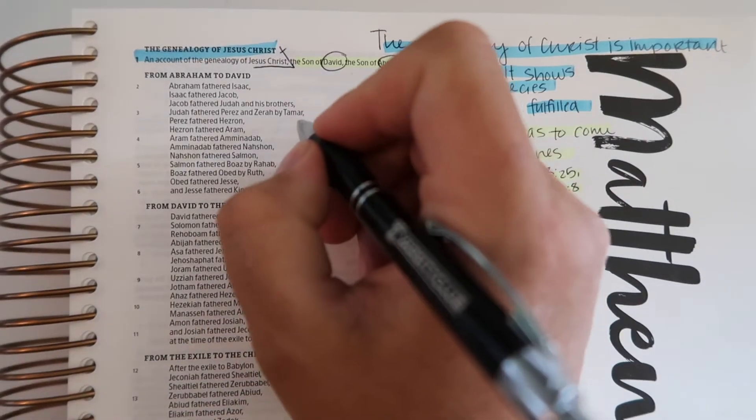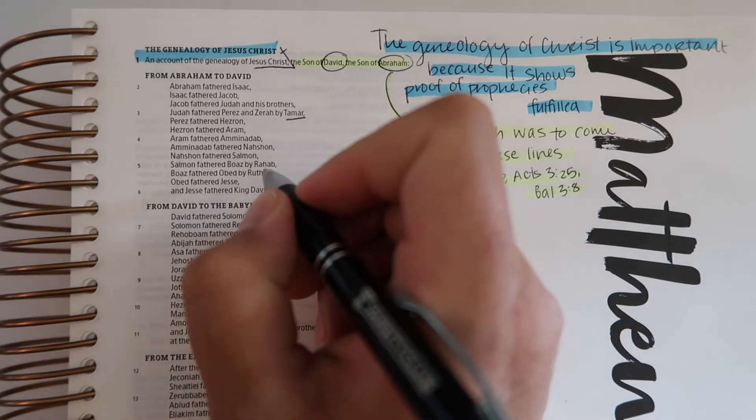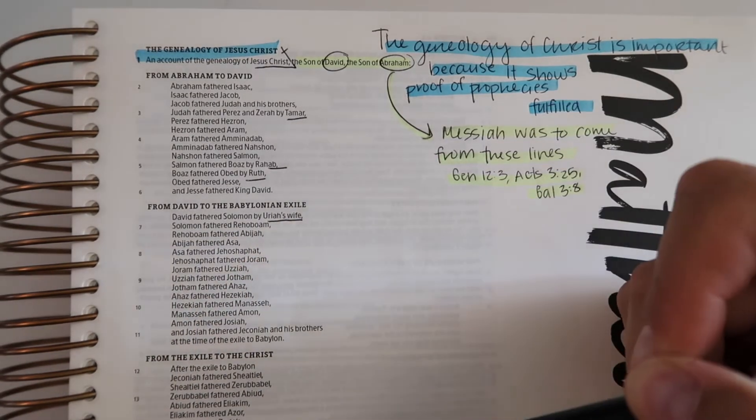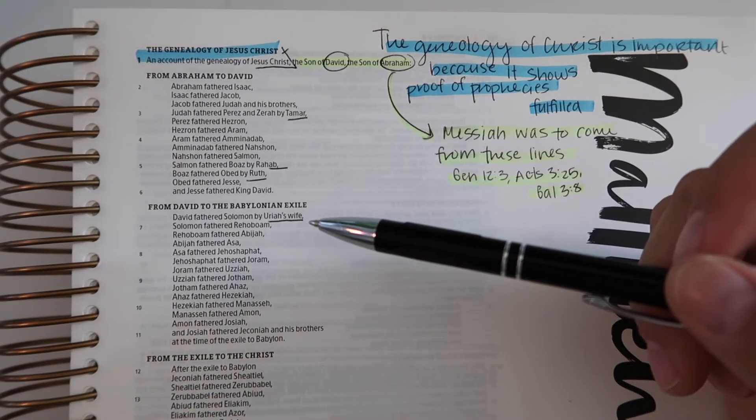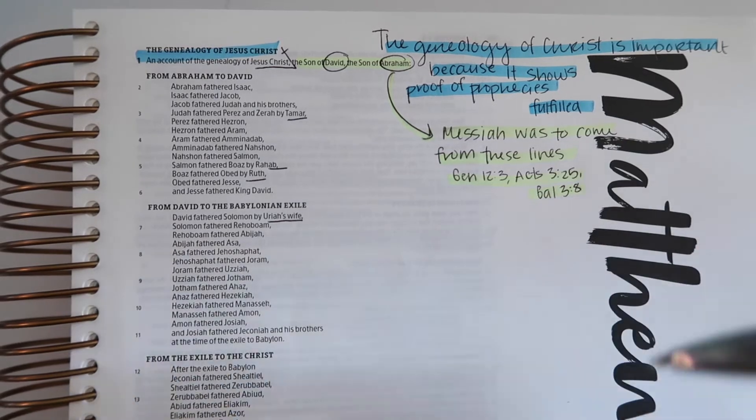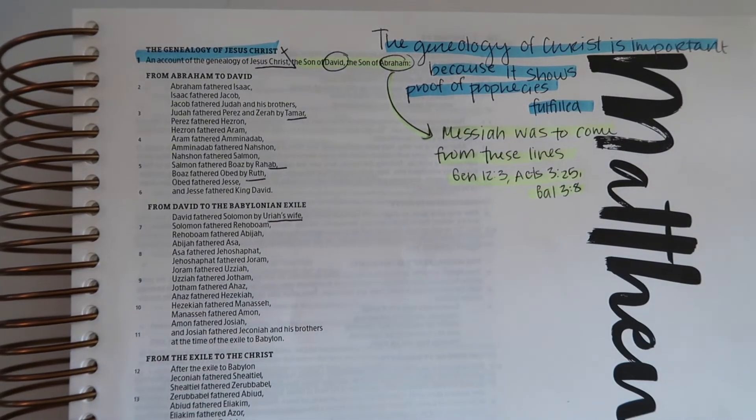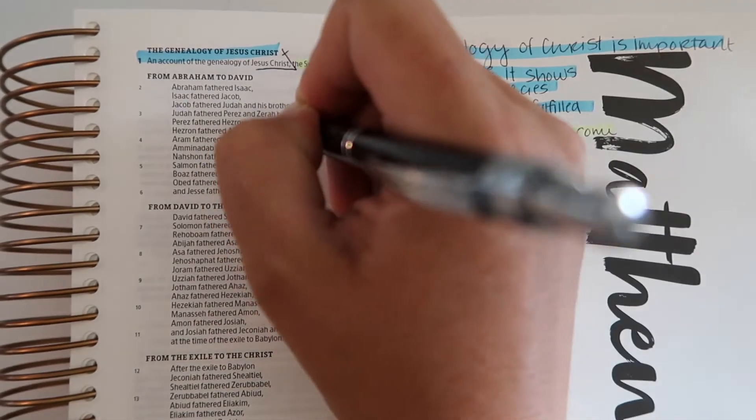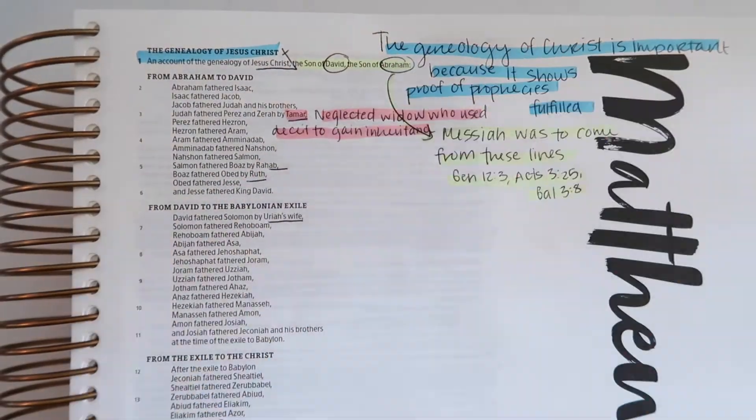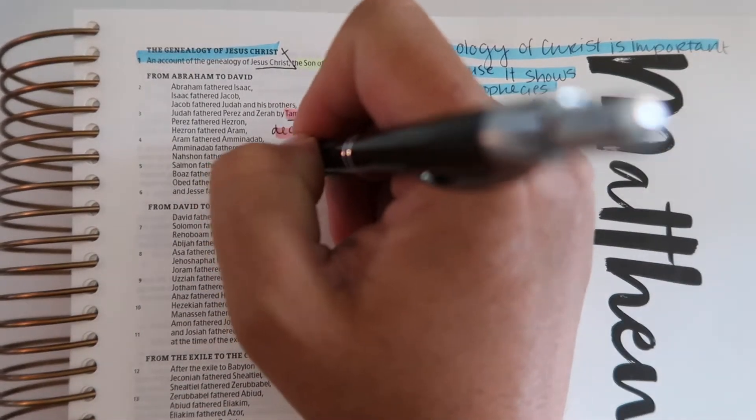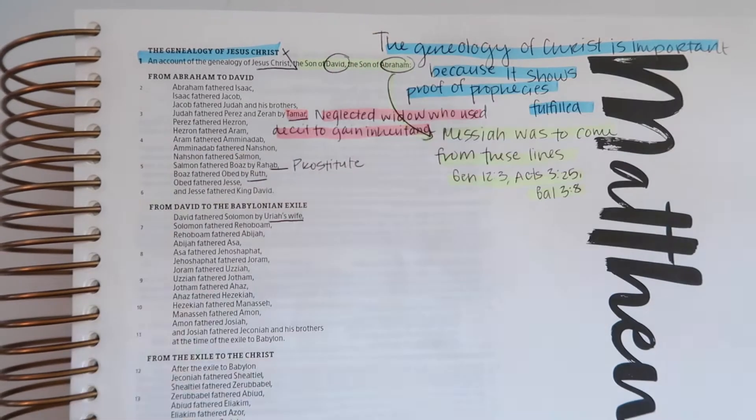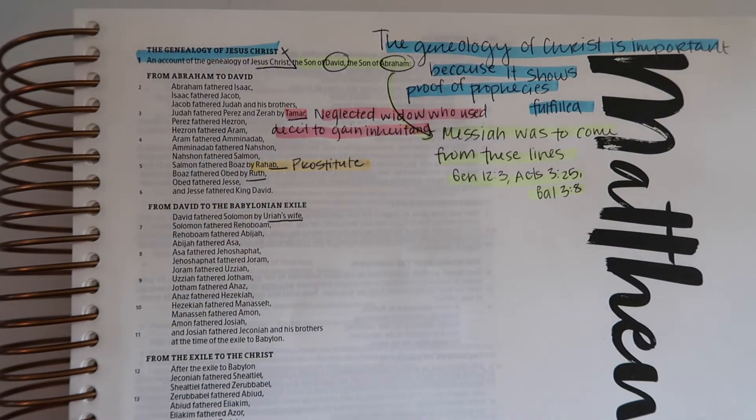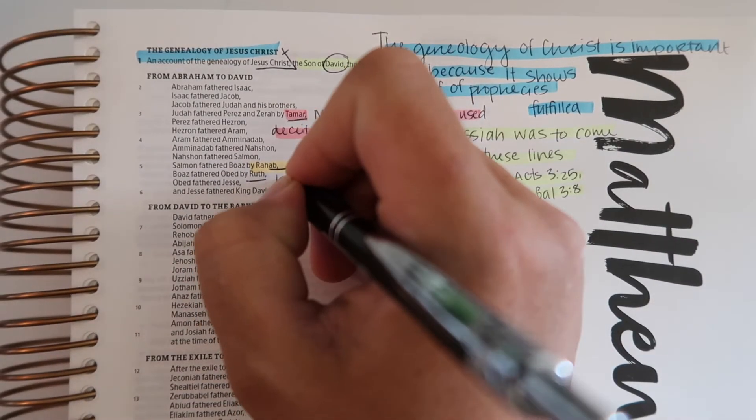I'm not going to read all of this genealogy, but I want to point out some things that I thought were really interesting. I'm going to point out Tamar, Rahab, Ruth and Uriah's wife. Out of all of this genealogy, these are the only four women that are mentioned. Tamar was a neglected widow who used deceit to get her inheritance. Rahab was a prostitute.